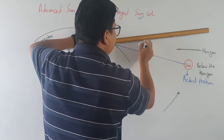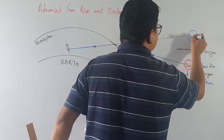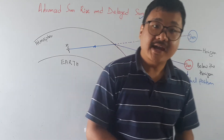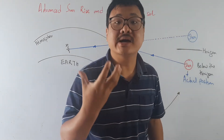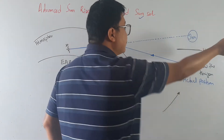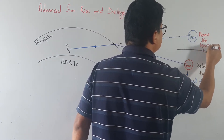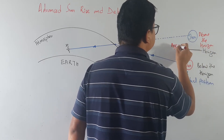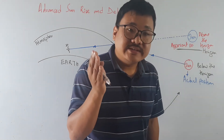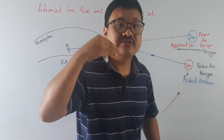You have to draw this very precisely. The sun's actual position is below the horizon, but when we extend the refracted ray, we find the apparent position of the sun above the horizon. Isn't that amazing? Because of atmospheric refraction, the sun appears above the horizon even though it is actually below it. That is why we see the sun two minutes before the actual sunrise — this is the advanced sunrise.